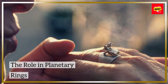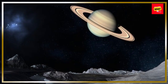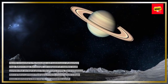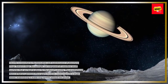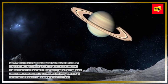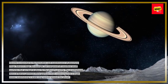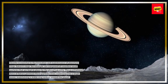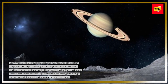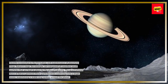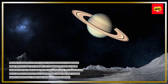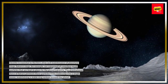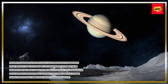Gravity is essential in the formation and maintenance of planetary rings. Saturn's rings, for example, are composed of countless small particles that are kept in place by the planet's gravity. The gravitational force of Saturn prevents these particles from coalescing into a single moon, maintaining a stable ring system around the planet.